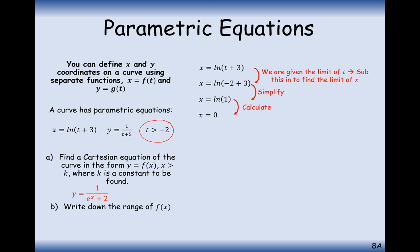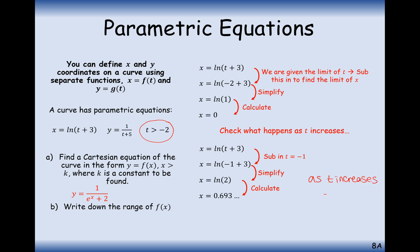Let's just do a little check by checking a coordinate slightly further up from minus 2. Let's maybe check t equals minus 1, for example. So, as t increases, what's going to happen to x? And we'll substitute t equals minus 1 in and we get 0.963. So, we can see that as t increases, x increases.